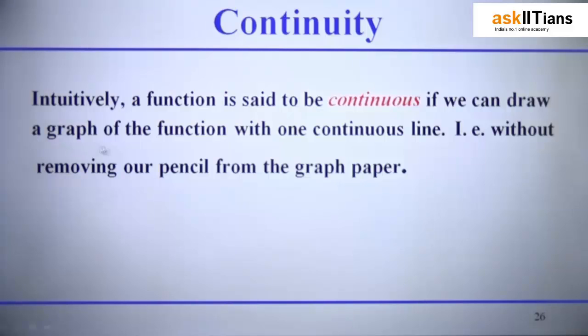A function is said to be continuous if we can draw the graph of the function with one continuous line. In other words, you can say that you have picked up your pen and now you're drawing a graph. If without pointing out or taking your pen out of your paper sheet you can draw the graph in complete go, then that function in rough terms is also called a continuous function.